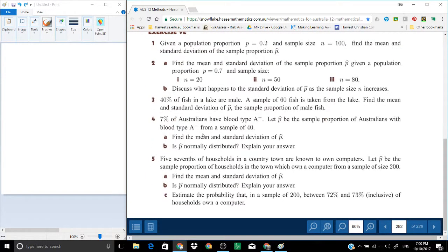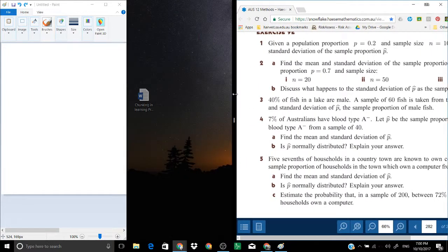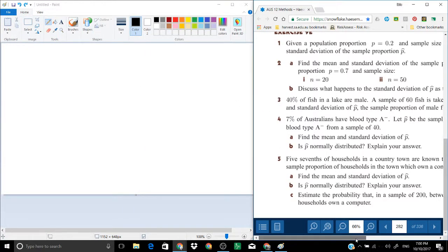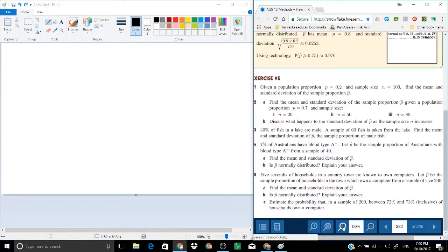Let's do question 5. We've got 5 sevenths of a household in the country town are known to own computers. Let p be the sample proportion of households in the town. Let the sample size be 200. We're looking at question 5.